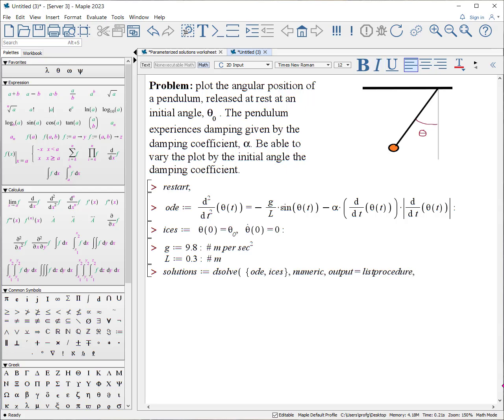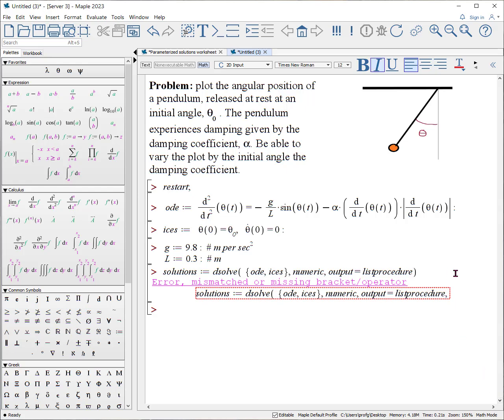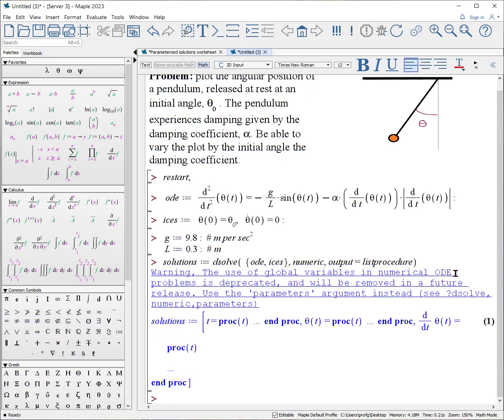Now normally this will not work, and in fact if I hit enter, well of course I've missed a bracket. If I put a parenthesis here, it doesn't work because it gives us this warning about global variables. One of the problems is two of our parameters have not been defined, that is α and θ₀. In fact, it actually says something about why don't you use the parameters argument. So that's what we're going to do.